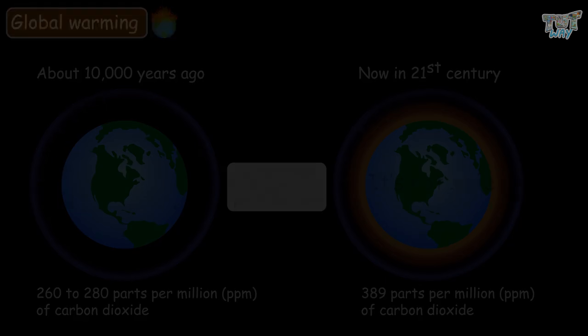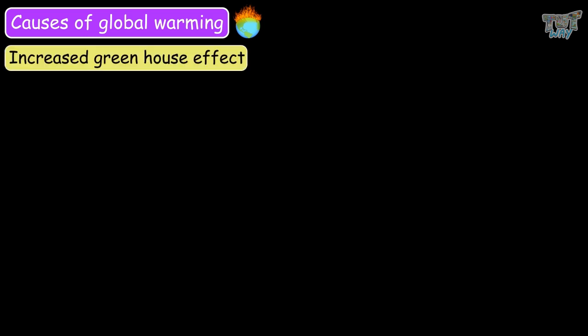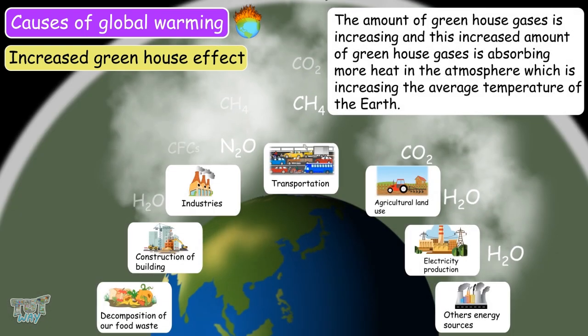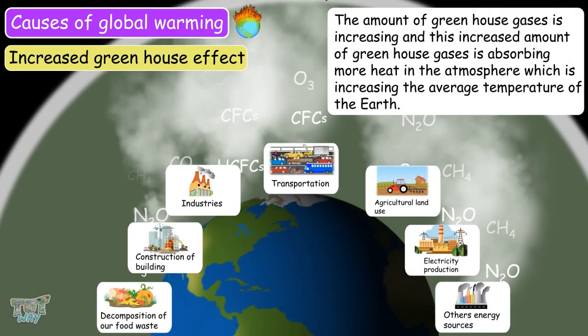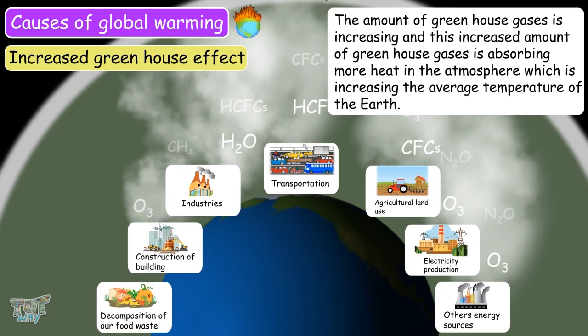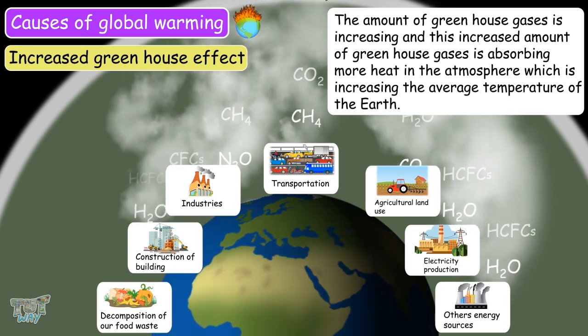Now, let's learn what are the causes of this increased greenhouse effect, or global warming. There are various natural causes that lead to global warming. And the first is the increased greenhouse effect. The amount of greenhouse gases is increasing. And this increased amount of greenhouse gases is absorbing more heat in the atmosphere, which increases the average temperature of the Earth.